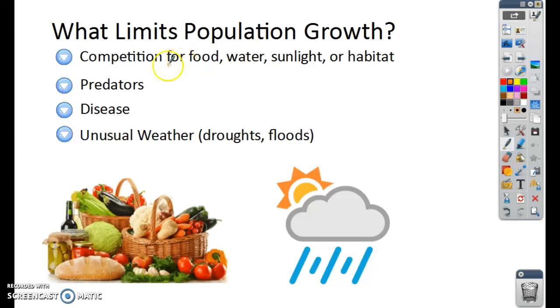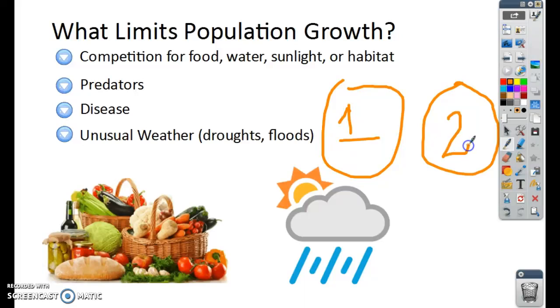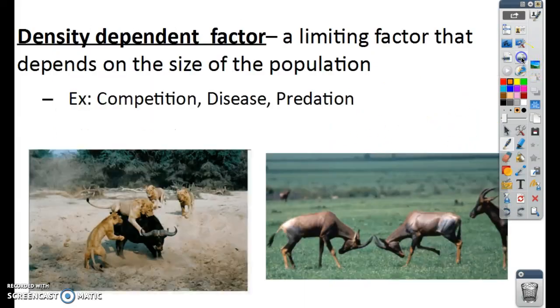So these characteristics, these things that limit population growth, we can put them into two categories. Two different categories. The first one is called density-dependent, and the second category is density-independent. These are two categories that we put these limiting factors into. So density-dependent factor, if it's dependent, it depends on density. We've talked about density.